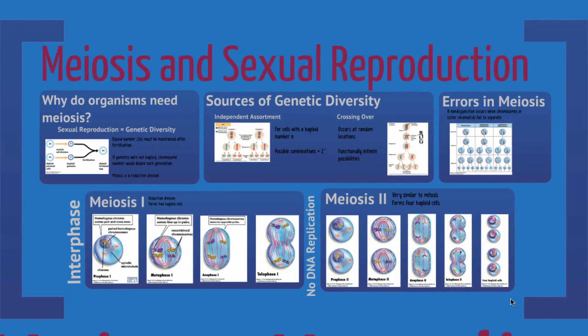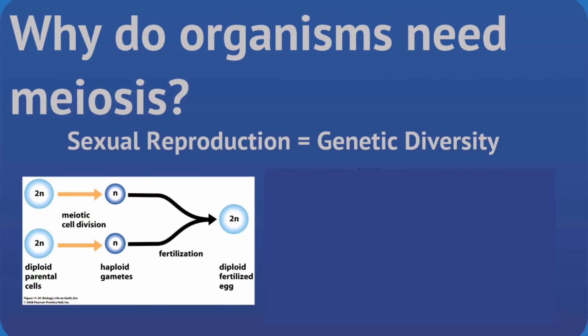To start with meiosis, remember this is the cell division that is involved with sexual reproduction. Any sexually reproducing organism that requires two parents is going to undergo some sort of meiotic cell division. Organisms need this meiotic cell division in addition to mitotic cell division in order to maintain the chromosome number. When two parents donate DNA to the offspring, both parents need to cut the amount of DNA in those cells by half so that the resulting offspring have the correct chromosome number.